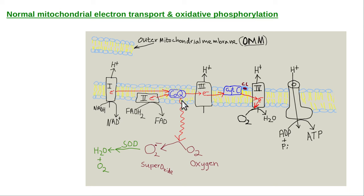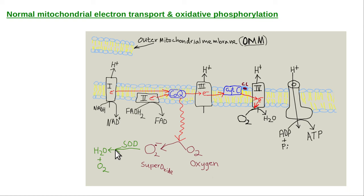About 1% of electrons under normal conditions join with oxygen in the matrix to become superoxide anions — that's the bottleneck at coenzyme Q. Then SOD, superoxide dismutase, converts that to hydrogen peroxide, and catalase or thioredoxins convert the hydrogen peroxide into H2O and oxygen. That happens all day long in every cell in your body.